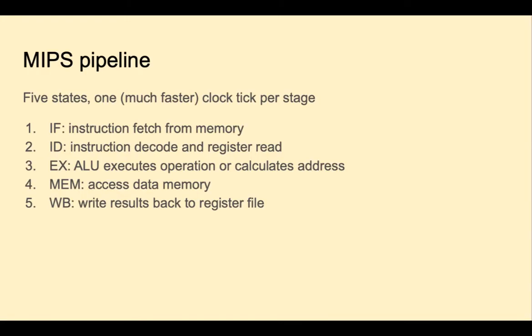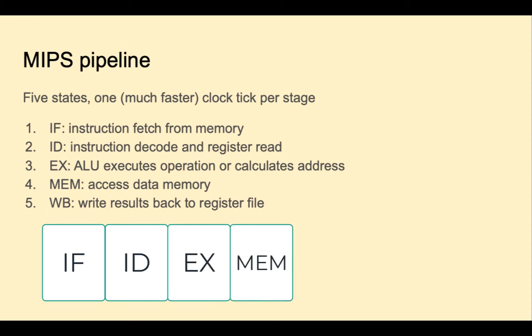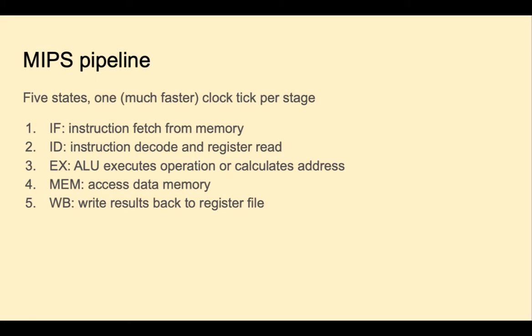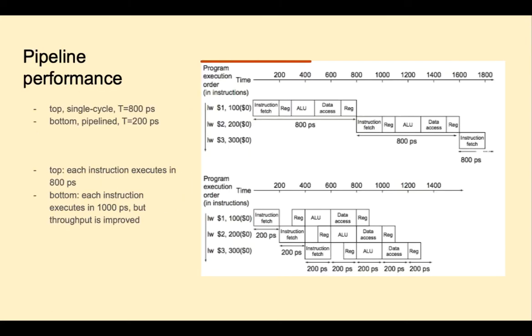To implement pipelining, we need to divide the MIPS data path into 5 stages: instruction fetch, instruction decode and register read, ALU execution, data memory access, and writing back to the register file. Now instead of one long clock cycle, each instruction executes in 5 short clock cycles. Here's what that looks like.